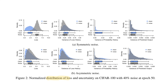They perform analytics on the distribution of loss and uncertainty on CIFAR-100 with 40% noise at epoch 50. The top row shows symmetric noise and the bottom row shows asymmetric noise. For loss, you can see that the reason approaches like DivideMix work well is that loss values can easily distinguish between clean and noisy examples under symmetric noise, but this relationship is less clear for asymmetric noise. Similarly for uncertainty: under symmetric noise, noisy examples tend to have near-zero predicted probability variance, but under asymmetric noise it's quite different, warranting different methodologies.